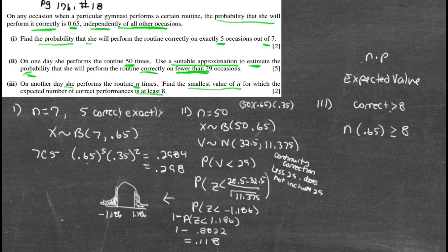So now all I'm going to do is get that n by itself: 8 divided by 0.65, it's going to be 12.3. Well, if it's going to be 12.3, then the smallest n to make this work is going to be 13.